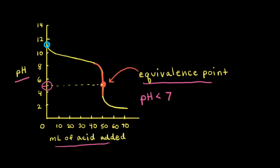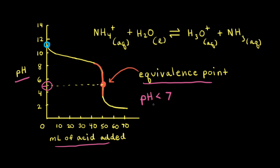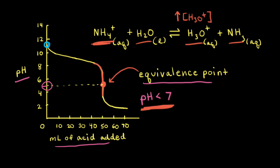The pH is less than 7 for a weak base/strong acid titration. This is because all the ammonia has been completely neutralized and converted into the ammonium cation NH4+. The ammonium cation is a weak acid that reacts with water to form hydronium ions H3O+ and ammonia. Since ammonium increases the concentration of hydronium ions, the pH drops below 7. Chloride anions are also present in solution but do not react with water and do not affect the pH.